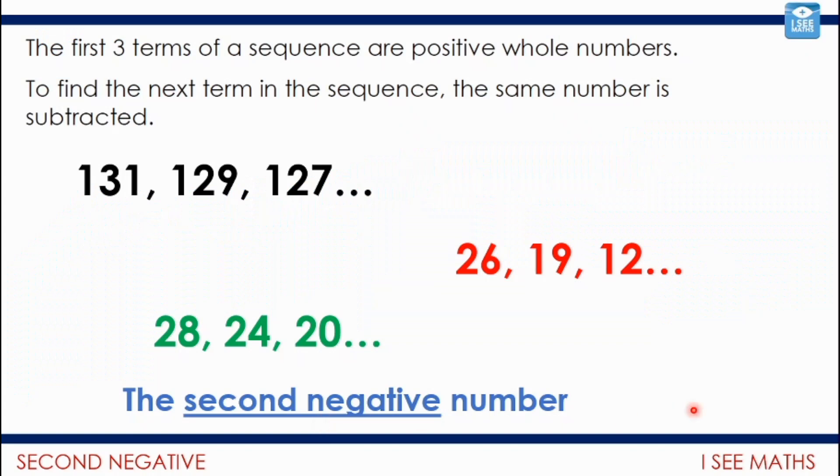So have a look at these sequences here. The first three terms of a sequence are positive whole numbers. They are in all three of these examples. To find the next term in the sequence, the same number is subtracted. So for each sequence, your task is this. What is the second negative number going to be? And see if you can do it without always having to count back in steps of the number that's been subtracted. Pause the video and have a go.